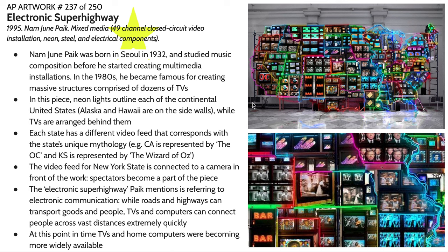Each state has a different video feed for the televisions within its borders, and those video feeds correspond with the state's unique kind of televised mythology. For example, California's broadcast is represented by the show The O.C., and Kansas is represented by The Wizard of Oz. The video feed for New York state is connected to a camera inside the installation, so the spectators actually become a part of the piece — the viewer sees themselves inside of the New York broadcast.